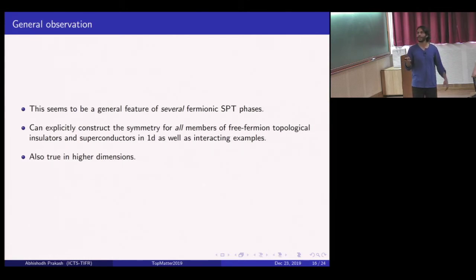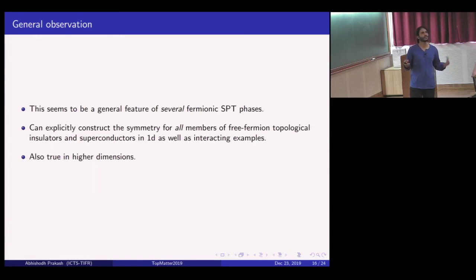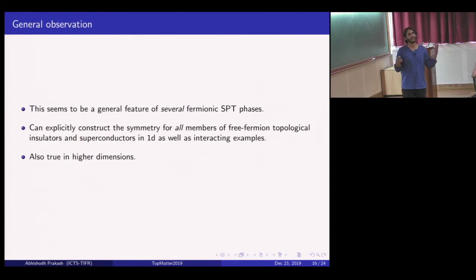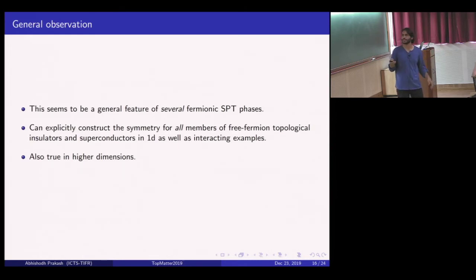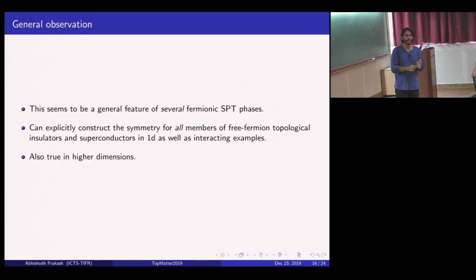This symmetry is supersymmetric in the specific sense that it maps a state with fermion parity +1 to fermion parity −1. My claim is this seems to be a generic feature of a large class of fermionic SPT phases. In our paper we explicitly construct this boundary symmetry for every element of the Altland-Zirnbauer symmetry classes, and we can also show this is true for inherently interacting one-dimensional fermionic phases and interacting versions of the Altland-Zirnbauer members. It's also true for higher dimensions—canonical examples like the quantum spin Hall insulator, the topological insulator, and topological superconductors all have some flavor of this emergent internal supersymmetry.